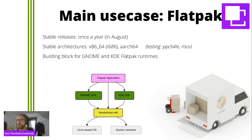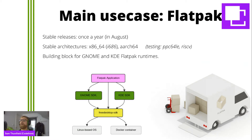The main use case of the Free Desktop SDK is the Flatpak app sandboxing tool. If you run a Linux desktop and you run Spotify or Steam or something like that, then maybe you use Flatpak. There's a stable release of the SDK every year. They release for two architectures: 64-bit ARM and 64-bit Intel. Inside the 64-bit Intel is a 32-bit system which is also built.